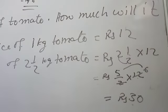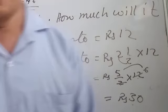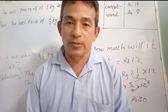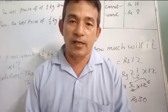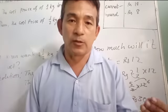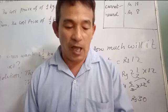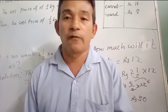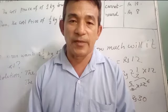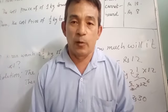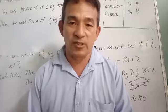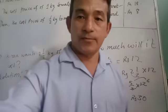Okay students, so this is how we solve our problems according to our questions given in the book. Today I have completed up to 3 questions: A, B and C. Five more questions D, E, F, G, H are remaining behind, so those 5 questions will be done by you as your homework. Thank you very much for watching the video.